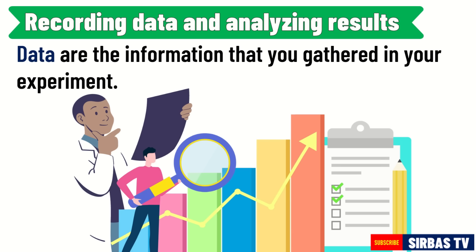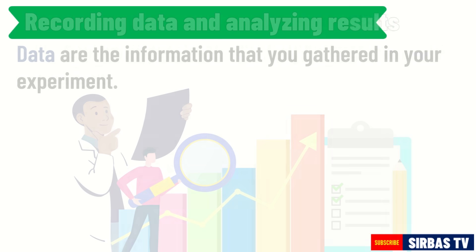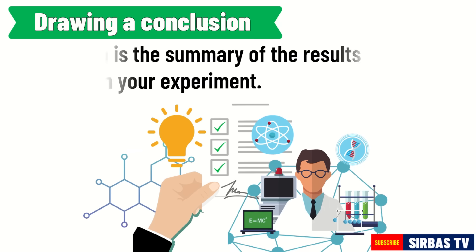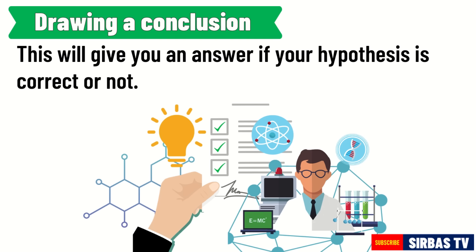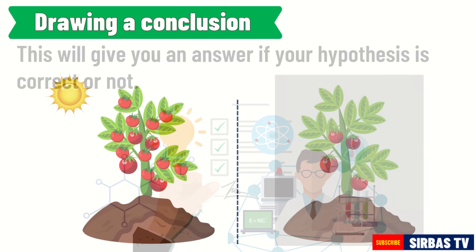Data are the information that you gathered in your experiment. The next part of the scientific method is drawing a conclusion. The conclusion is the summary of the results you gathered in your experiment. This will give you an answer as to whether your hypothesis is correct or not. If the hypothesis is correct, this may be the answer to your problem. If not, you need to repeat the experiment or think of a new approach to improve your procedures. You can also go back to the first step if needed.